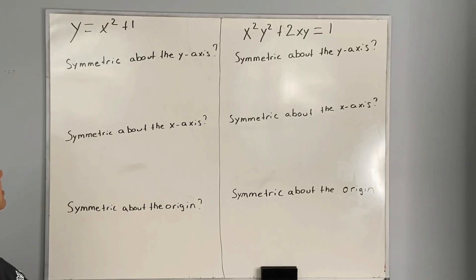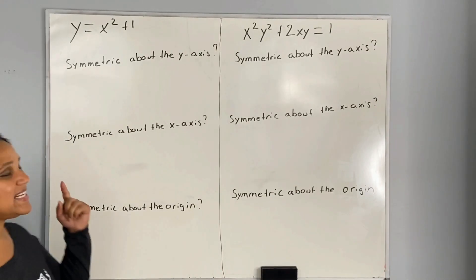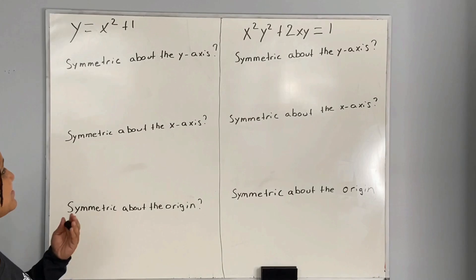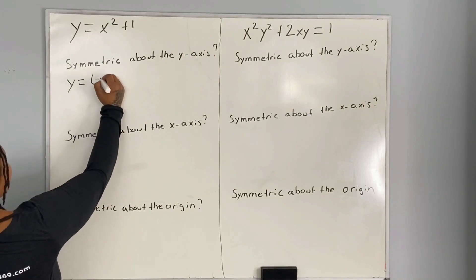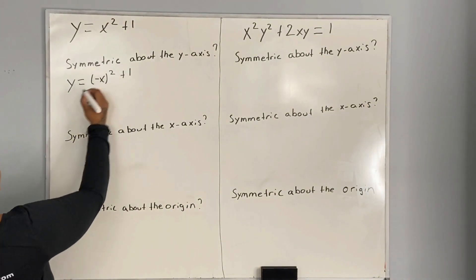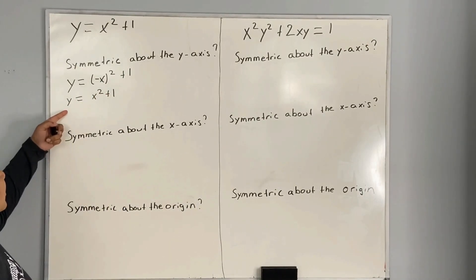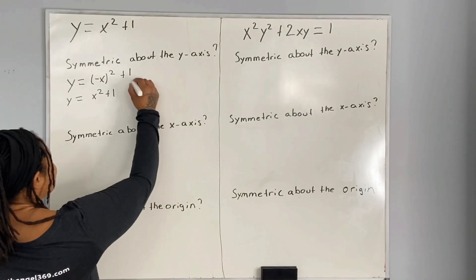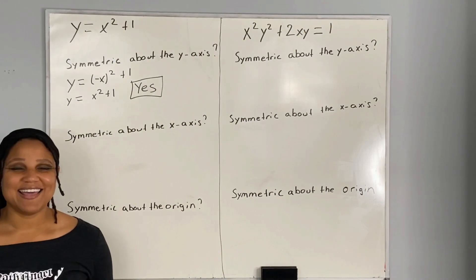We want to ask ourselves, is the graph of the equation symmetric about the y-axis? In order to answer this question, we are going to replace x with negative x. If we get the original equation, then it is symmetric about the y-axis. So we take y is equal to negative x squared plus 1, which gives us y is equal to x squared plus 1. Our answer is exactly the same as our original equation. Therefore, yes, the graph of the equation is symmetric about the y-axis.